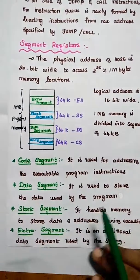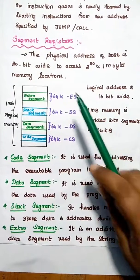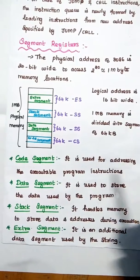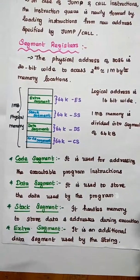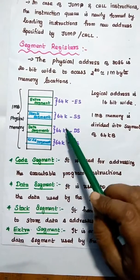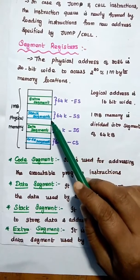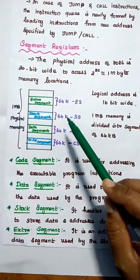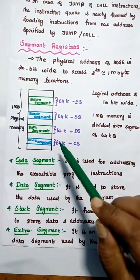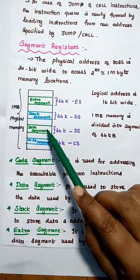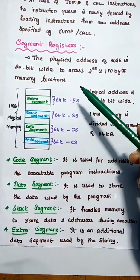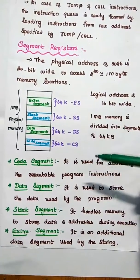The physical address of the 8086 processor is 20 bits wide, so we can access 2^20, that is 1 megabyte, of memory locations. The memory is segmented into four 64K segments: extra segment, stack segment, data segment, and code segment — with an overall physical size of 1 megabyte. All data-related details are stored in the data segment, program instructions are stored in the code segment, and the extra segment can be used additionally for string operations.